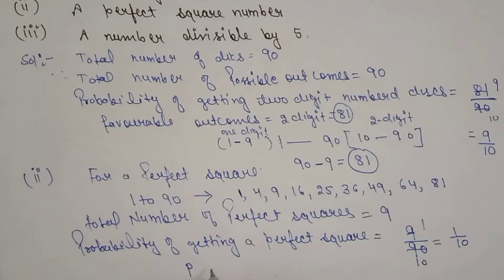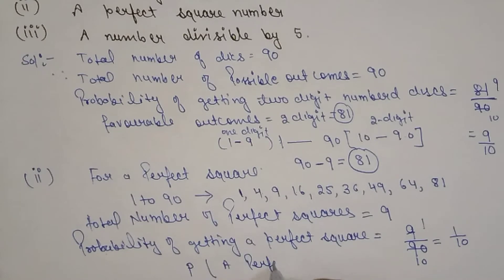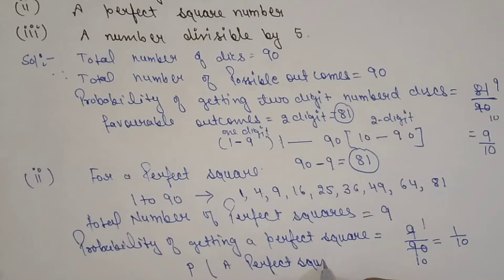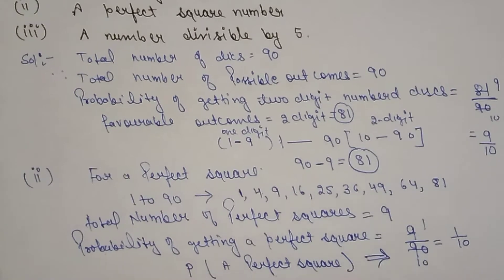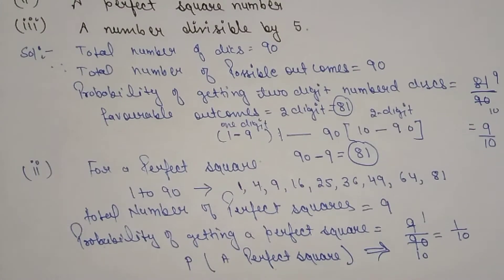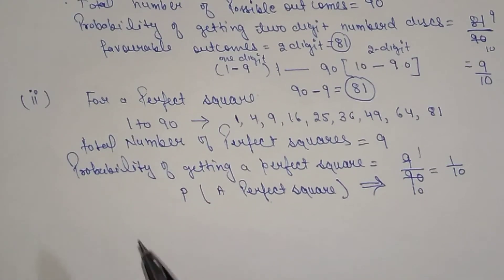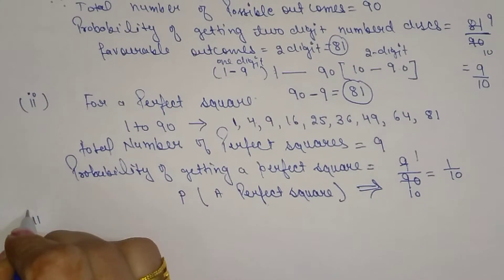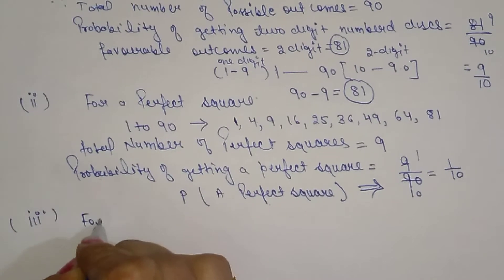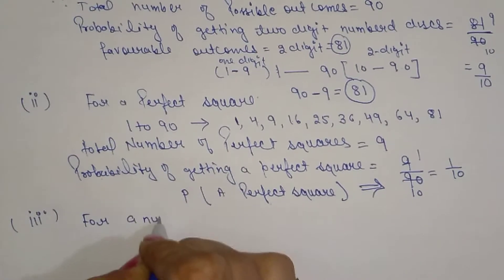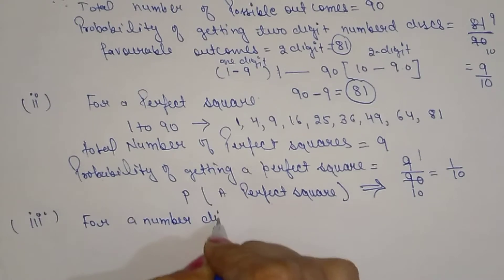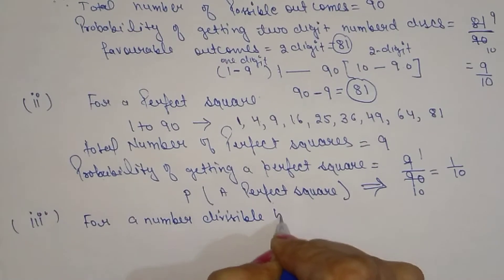You can also write probability denoted as P, so P(perfect square) = 1/10. You can write it either way, as you wish. Now come to the third part: a number divisible by five. The third part asks: what are the chances of getting a multiple of five or a number divisible by five?